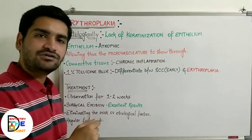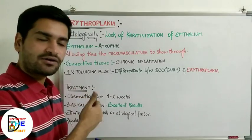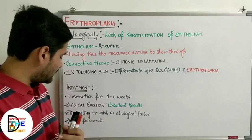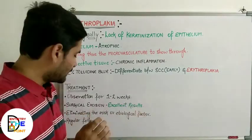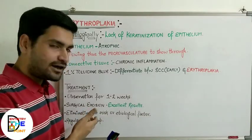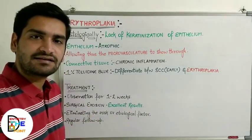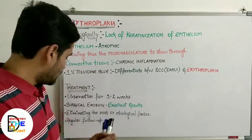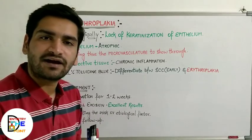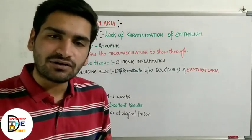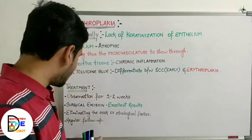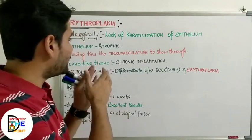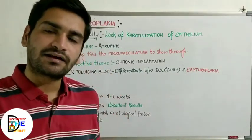For treatment of erythroplakia: first, continuously observe the patient and take regular follow-up for one to two weeks to observe the clinical course of the disease. Take a biopsy sample to confirm the diagnosis. Treatment then involves surgical excision, which gives excellent prognosis and results. Along with that, eliminate the risk and etiological factors such as tobacco and alcohol. Regular follow-up of the patient should also be done.